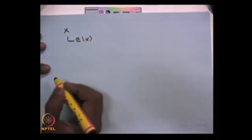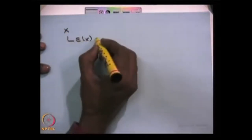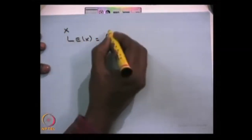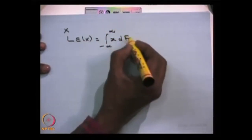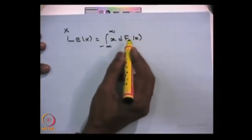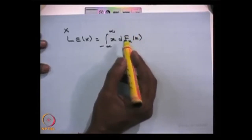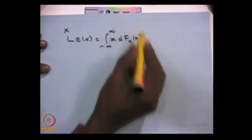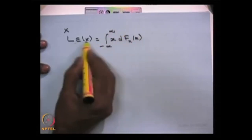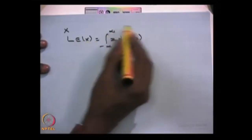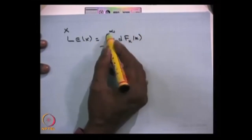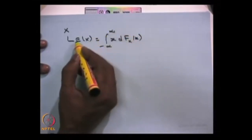Moving to the next concept, there are some moments we can find from a random variable. Suppose you have a random variable X; you can find the expectation of X if it exists. If the random variable X is given, you can write the expectation of X as the integral from minus infinity to infinity of X times dF(x), where capital F is the CDF of the random variable. Whether the random variable is discrete, continuous, or mixed type, if this integration exists, then the expectation equals this value. If the integration diverges, you cannot write the expectation of X.